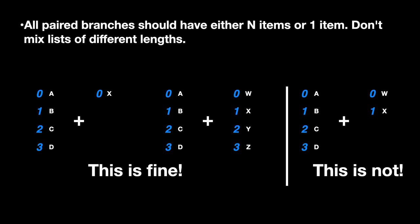So the first rule is all paired branches should have either n items or one item. Don't mix lists of different lengths. So when you're matching items you want to make sure every list being matched has either n items or one item. And it doesn't matter how long n is. I'm just using n as a placeholder for any number. You almost never want the case where the two lists have different lengths. There are exceptions with some components but this is a good rule of thumb to follow especially until you really know what you're doing. And so this plus that I'm indicating here in the diagram these are two lists going into the input of a component. So it's just like our previous example with concatenate. You can imagine the left hand side of the plus being list A and the right hand side of the plus being list B.